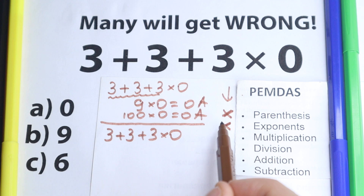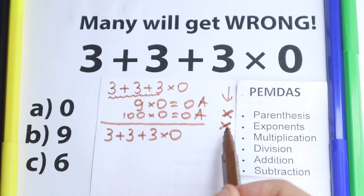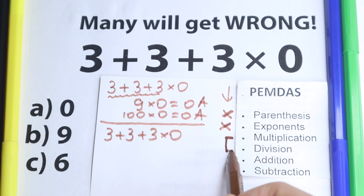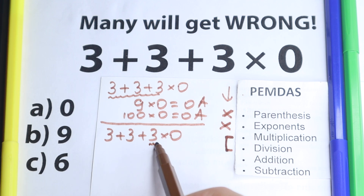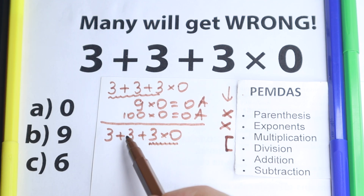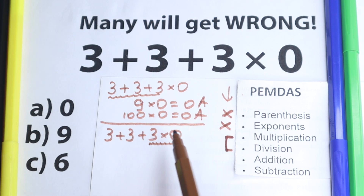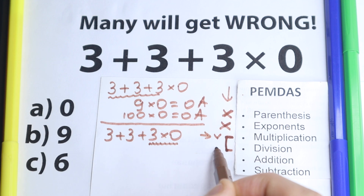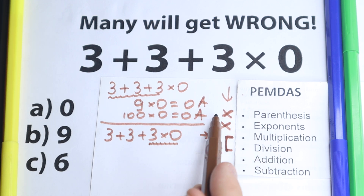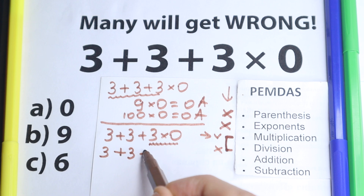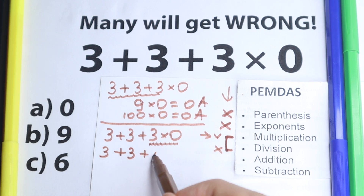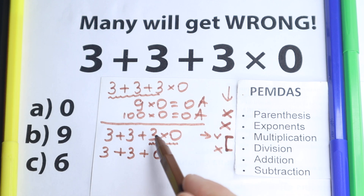Without parentheses and exponents, this question is less complicated, so we move to the next step: the multiplication and division group. Where do we have multiplication and division signs? We have addition here, addition here, and right here we have a multiplication sign — but this multiplication sign applies only to these two numbers, not to the whole expression. So we have the multiplication part right here, and we start from this multiplication.